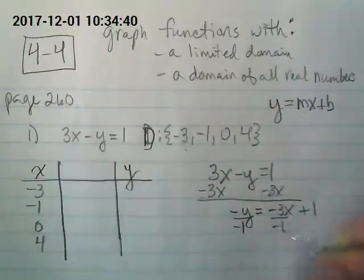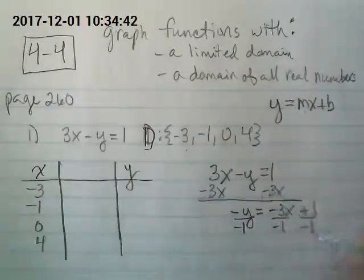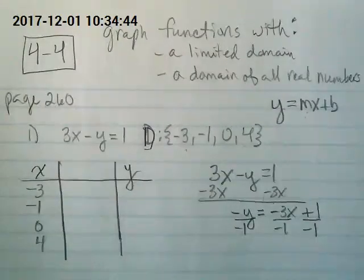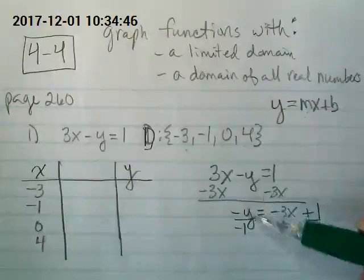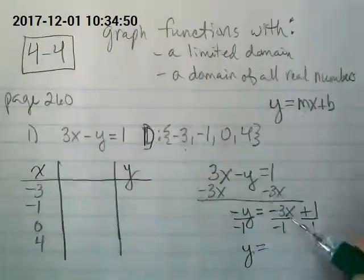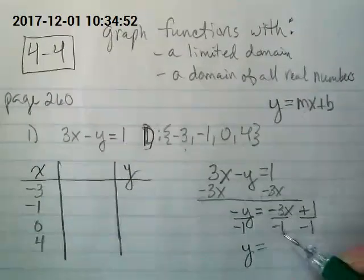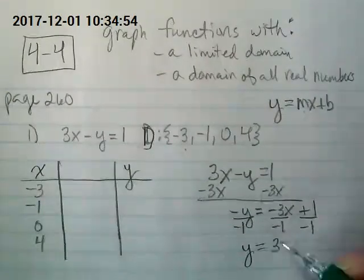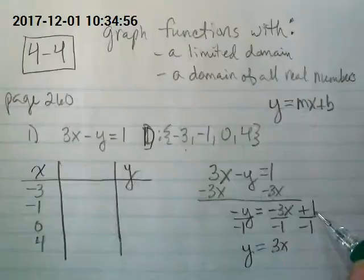We have to divide by negative 1 because the y is still not by itself. It has an invisible negative 1 in front of it. Its negative is there, but the 1 is invisible. Remember, when I divide these things, I have to divide all parts of them. So negative y divided by negative 1 becomes a positive y. Negative 3x divided by negative 1 becomes positive 3x. And what's going to happen to our positive 1? Negative 1.